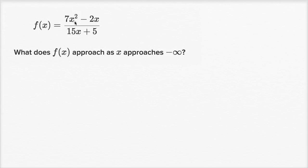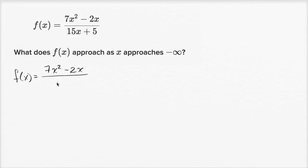One thing I like to do when considering the behavior of a function as x gets really positive or really negative is to rewrite it. So f of x equals 7x squared minus 2x over 15x minus five. An interesting technique is to divide both the numerator and the denominator by the highest degree term of x in the denominator.